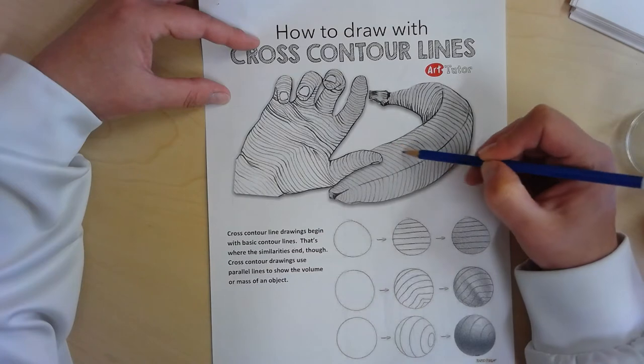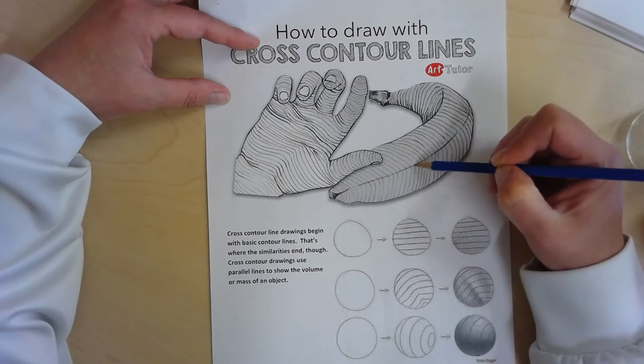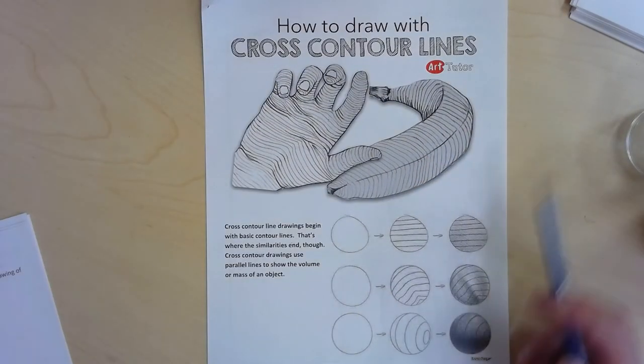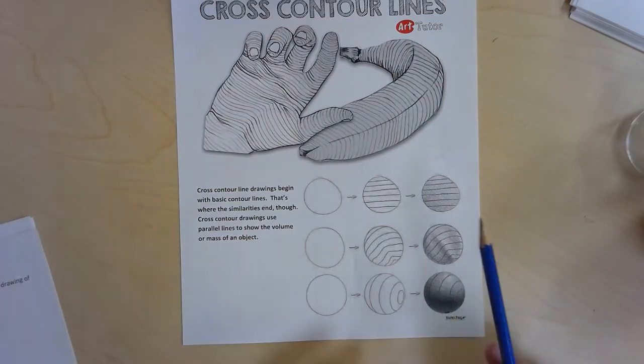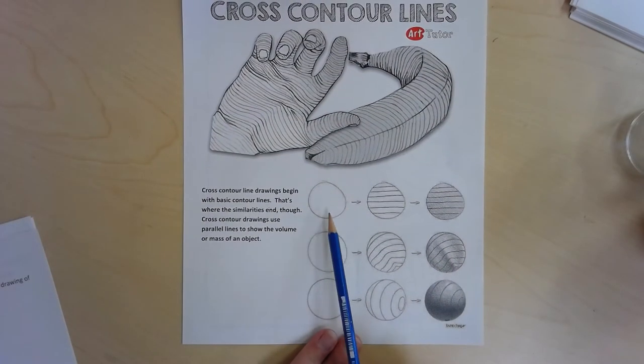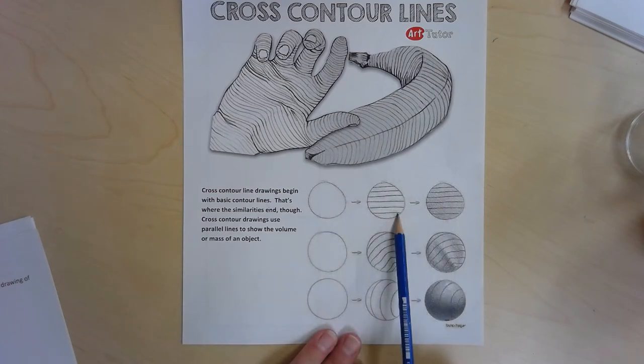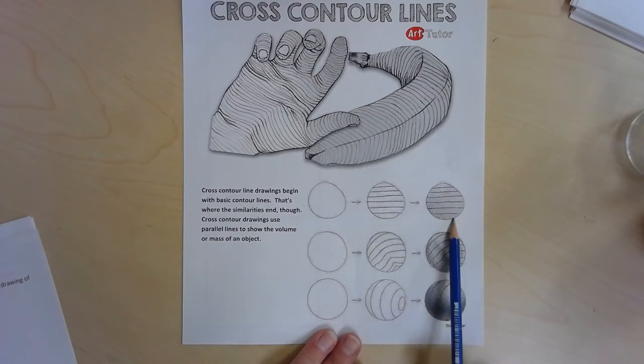it will really bring out the volume or the mass of this banana. The examples down below, the small examples, show starting with nothing and adding cross contour lines, parallel lines. You can then add value on top of it